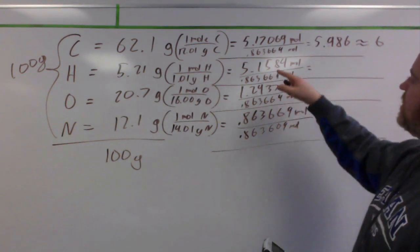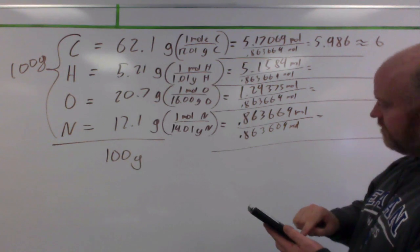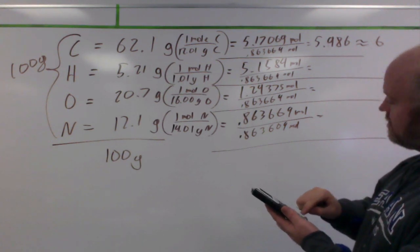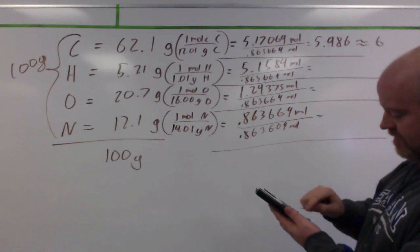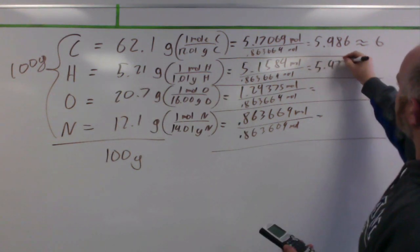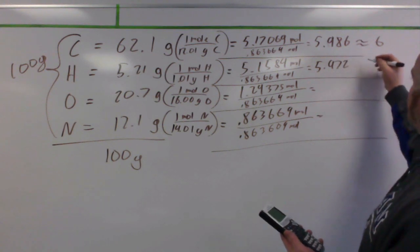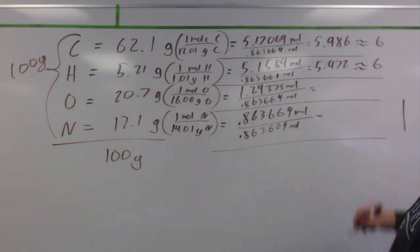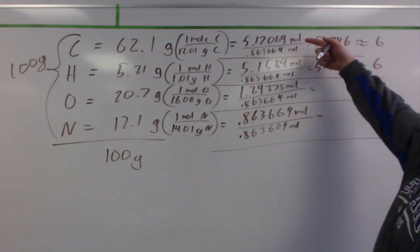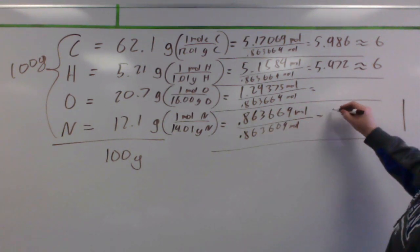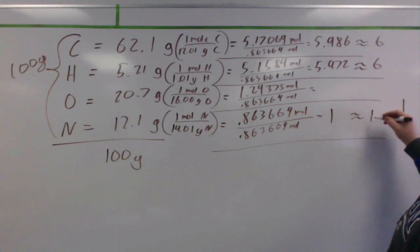Do the same thing for the next one, 5.1584 divided by 0.863669, and I get 5.972, et cetera. Again, extremely close to 6, so we're approximately a 6 to 1 ratio. This one obviously down here, that divided by itself would equal 1, so we got a 1.